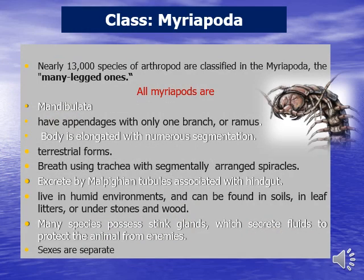Class Myriapoda contains nearly 13,000 species of Arthropoda. 'Myriapoda' means an animal with many legs. All Myriapods are mandibulates, have appendages with only one branch or ramus, an elongated body with numerous segments, breathe using tracheae with segmentally arranged spiracles, excrete by Malpighian tubules associated with the hindgut, and live in humid environments found in soils, leaf litter, or under stones and wood. Many species possess stink glands which secrete fluids to protect them from enemies. Sexes are separate — male and female.